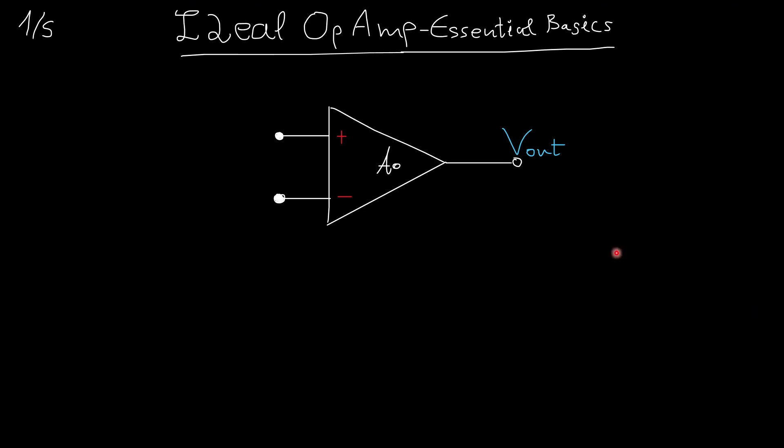We have an output node here. We have two inputs. This is called the non-inverting input and this is the inverting input. Just a name, not really something important. And there is a gain here of A₀.